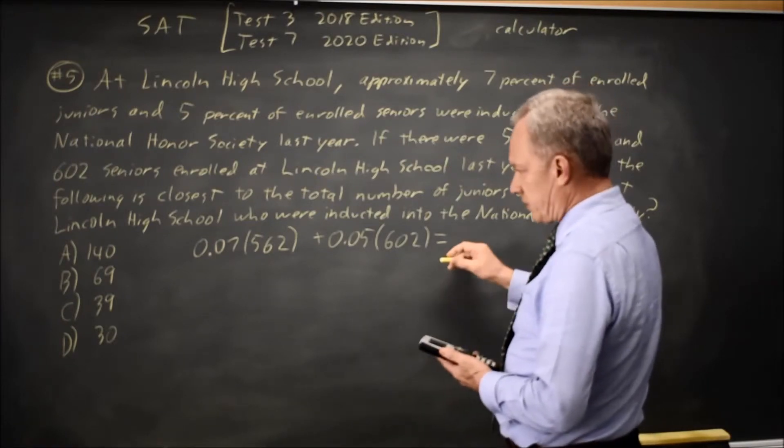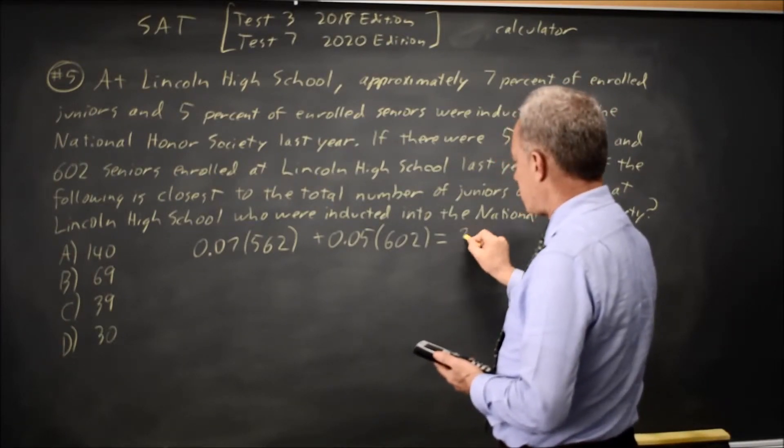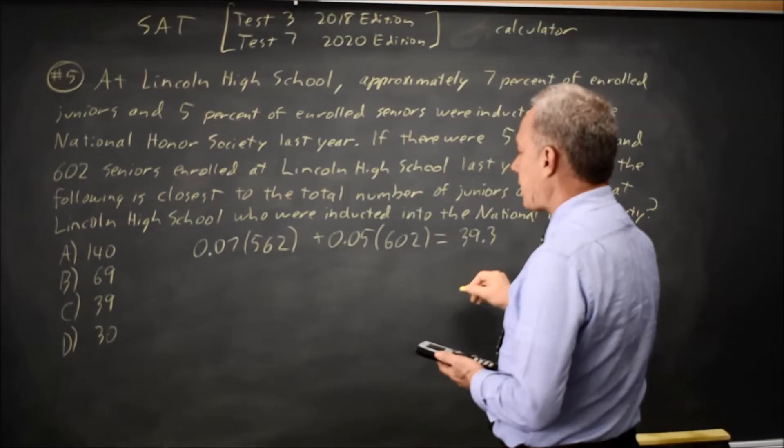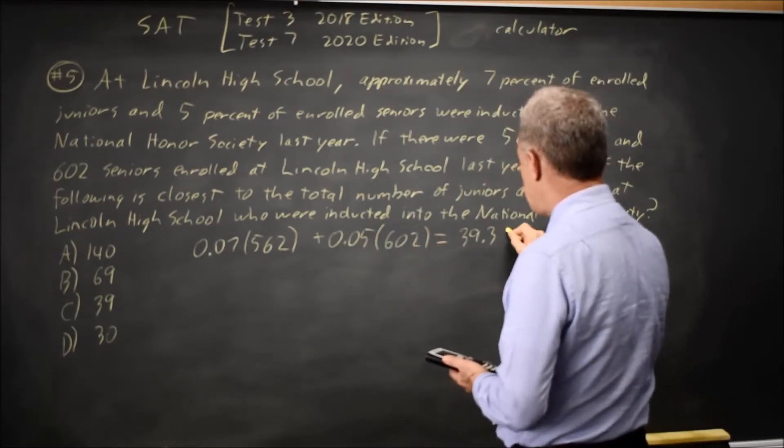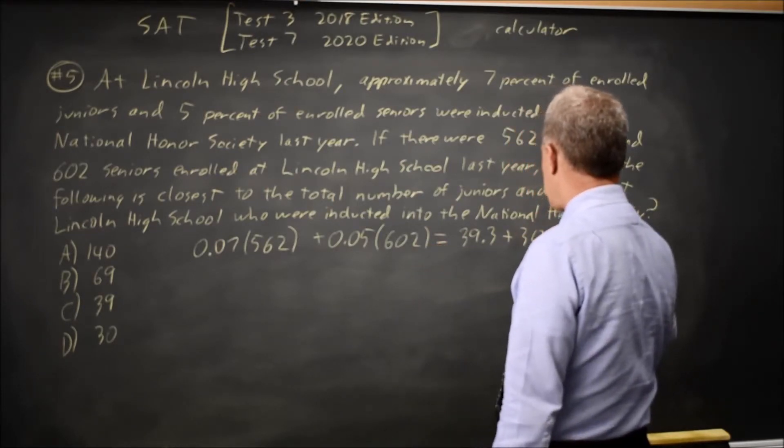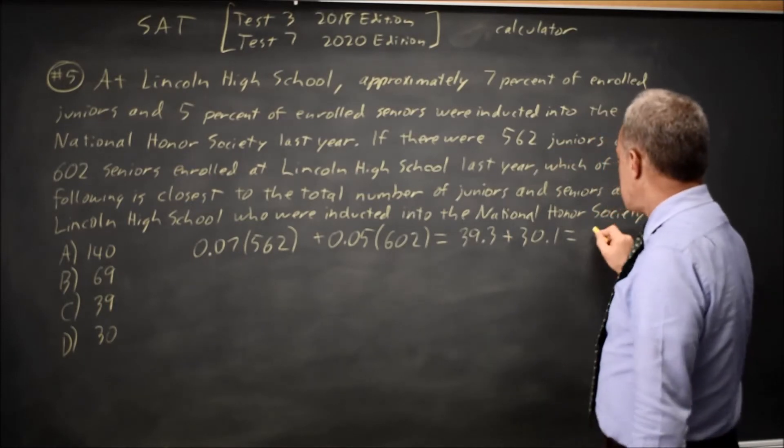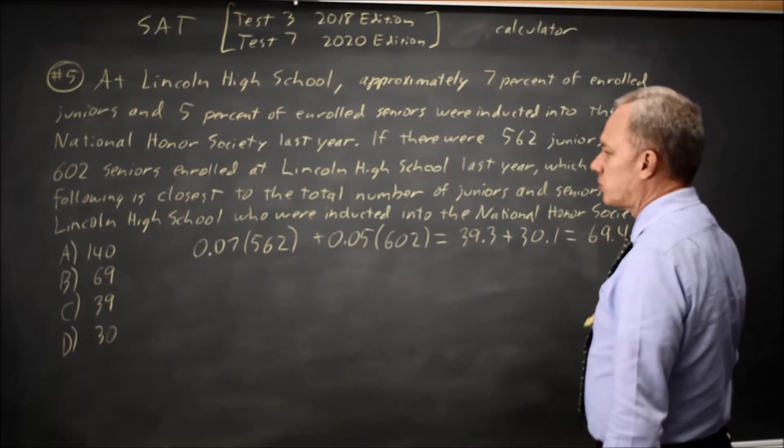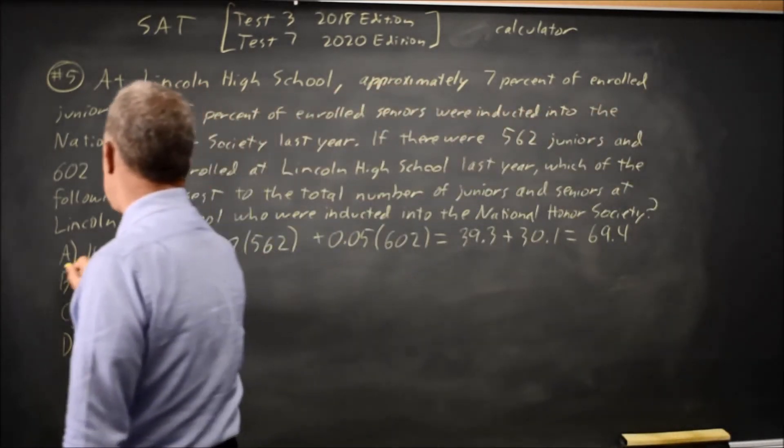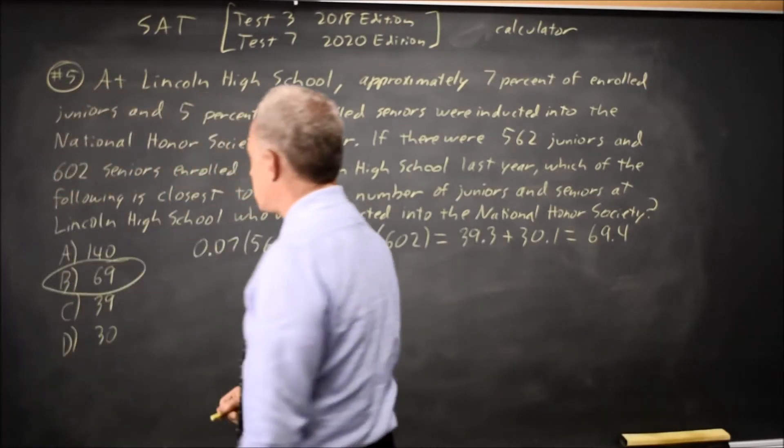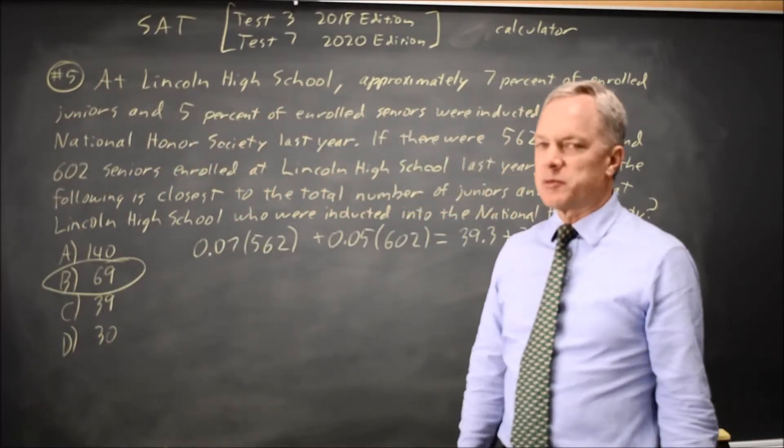7% of 562 is 39, and 5% of 602 is 30, giving us 69.4 students. The closest answer is choice B.